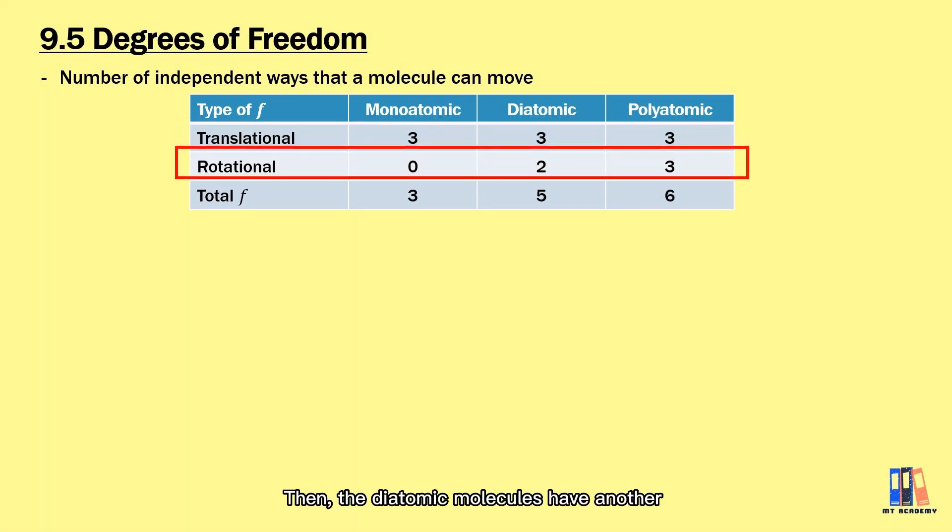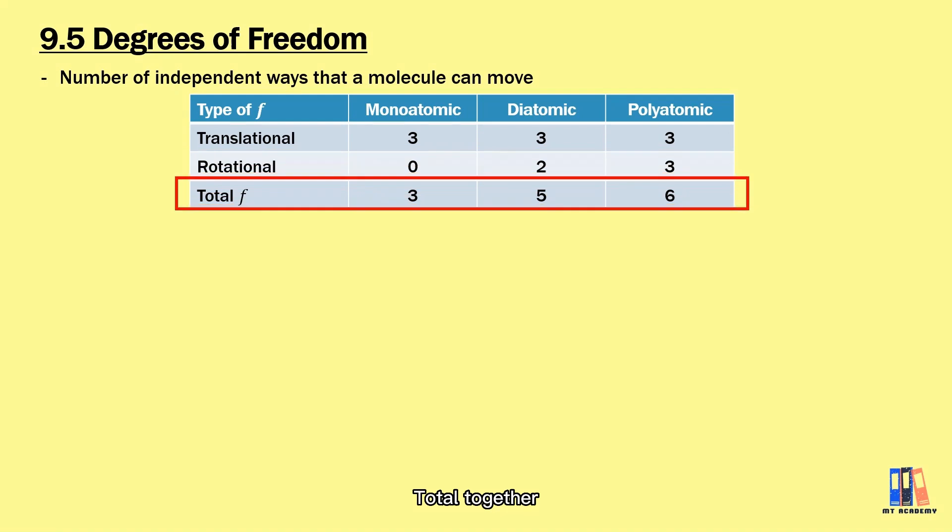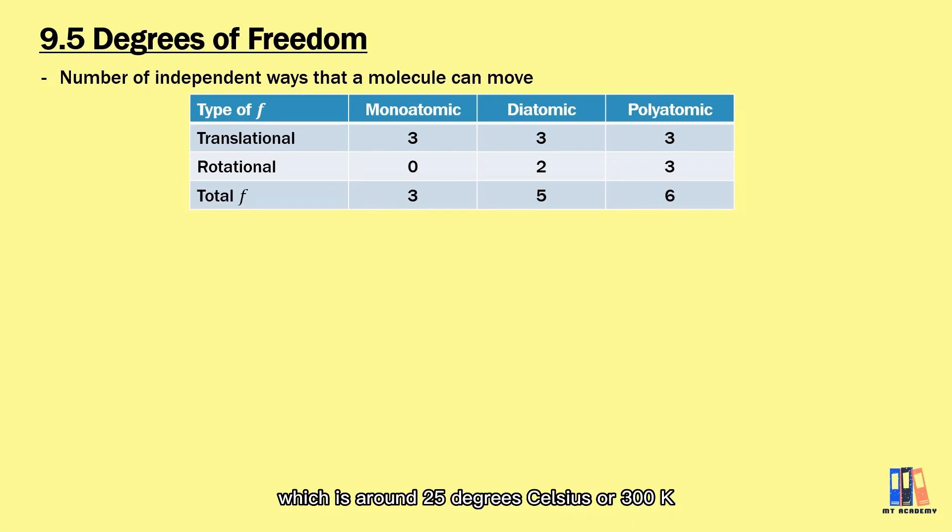Then, the diatomic molecules have another 2 degrees of freedom from the rotational kinetic energy while the polyatomic molecule has another 3. Total together, monoatomic, diatomic and polyatomic molecule have 3, 5 and 6 degrees of freedom respectively. So this is true when done in room temperature which is around 25 degrees Celsius or 300 Kelvin.